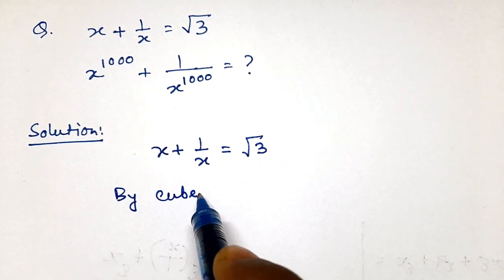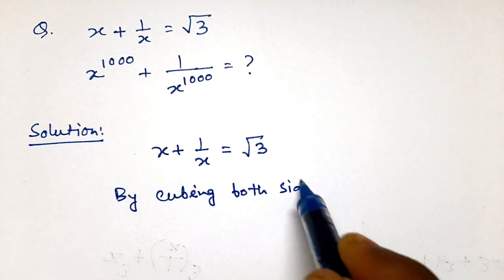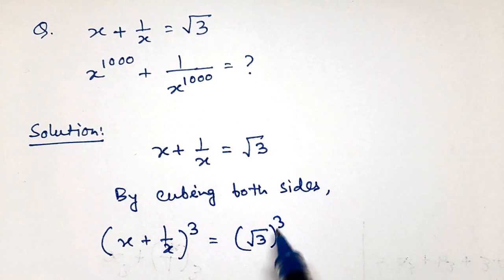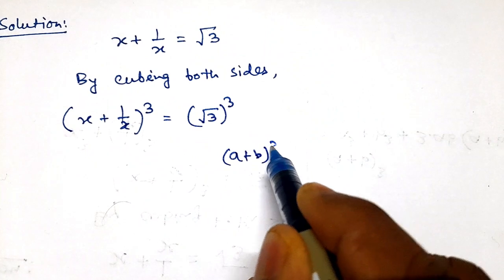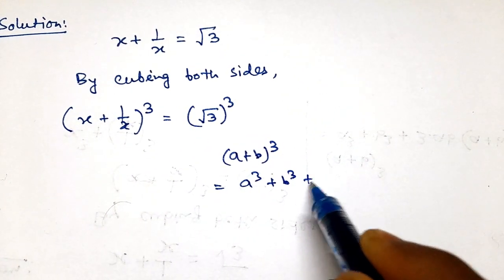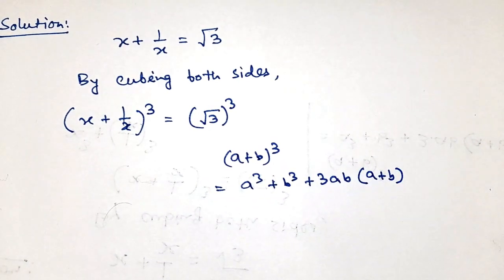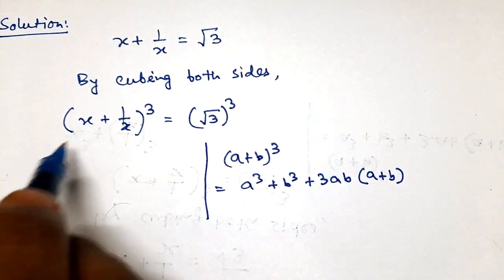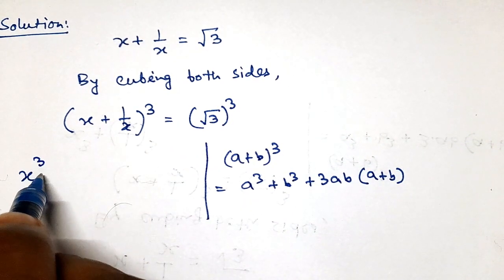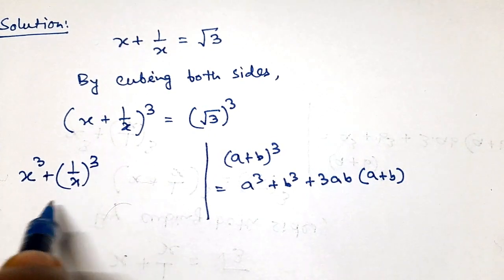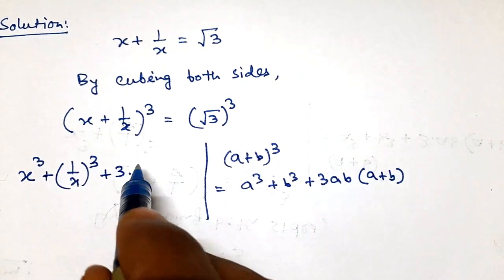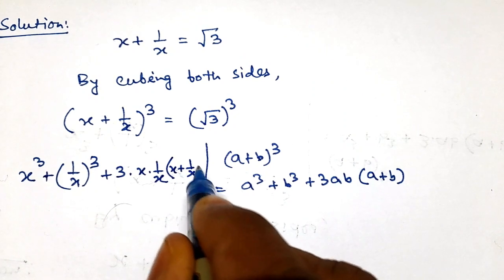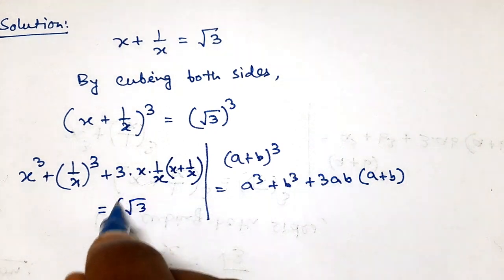We will cube both the sides. So what we get: x plus 1 by x, whole cube, is equals to cube of root 3. Now we know that (a + b)³ equals a³ + b³ + 3ab(a + b). In this equation x is a and 1 by x is b. So breaking it by the formula we get x³ + 1/x³ + 3 times x times 1/x times x plus 1 by x, equals root 3 cubed.